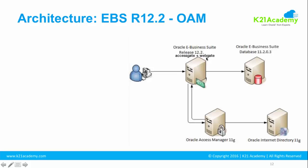I'll explain AccessGate and WebGate shortly. Both components get deployed on the EBS node. If you have multiple EBS nodes for high availability or clustering, you will deploy WebGate and AccessGate on each EBS middle tier. So if you have a three-node EBS environment, you must configure three WebGate and AccessGate instances on those servers, depending on whether each node is configured as a web node or application node.